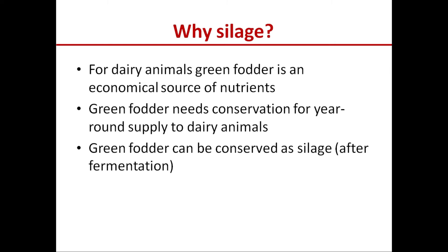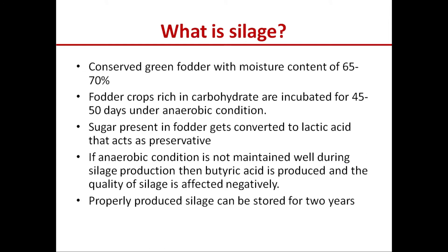Green fodder is an economical source of nutrients, but green fodder is available only seasonally. In a season when we have enough green fodder produced, we need to conserve it so that it can be fed to dairy animals year round. Green fodder can be conserved as silage after fermentation. Silage is a fermented, conserved green fodder with moisture content of 65 to 70 percent.